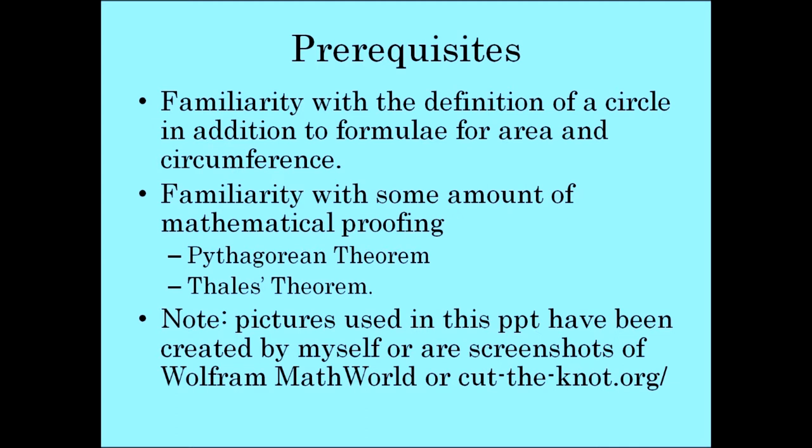Specifically, I'd like us to be aware of the Pythagorean theorem and Thales' theorem. Thales' theorem describes that if we have a triangle inscribed within a circle, and one of the sides of the triangle is a diameter of the circle, then we know the triangle is a right triangle. Most of the pictures in this PowerPoint I've created by myself, some are screenshots from Wolfram MathWorld or cut-the-knot.org.